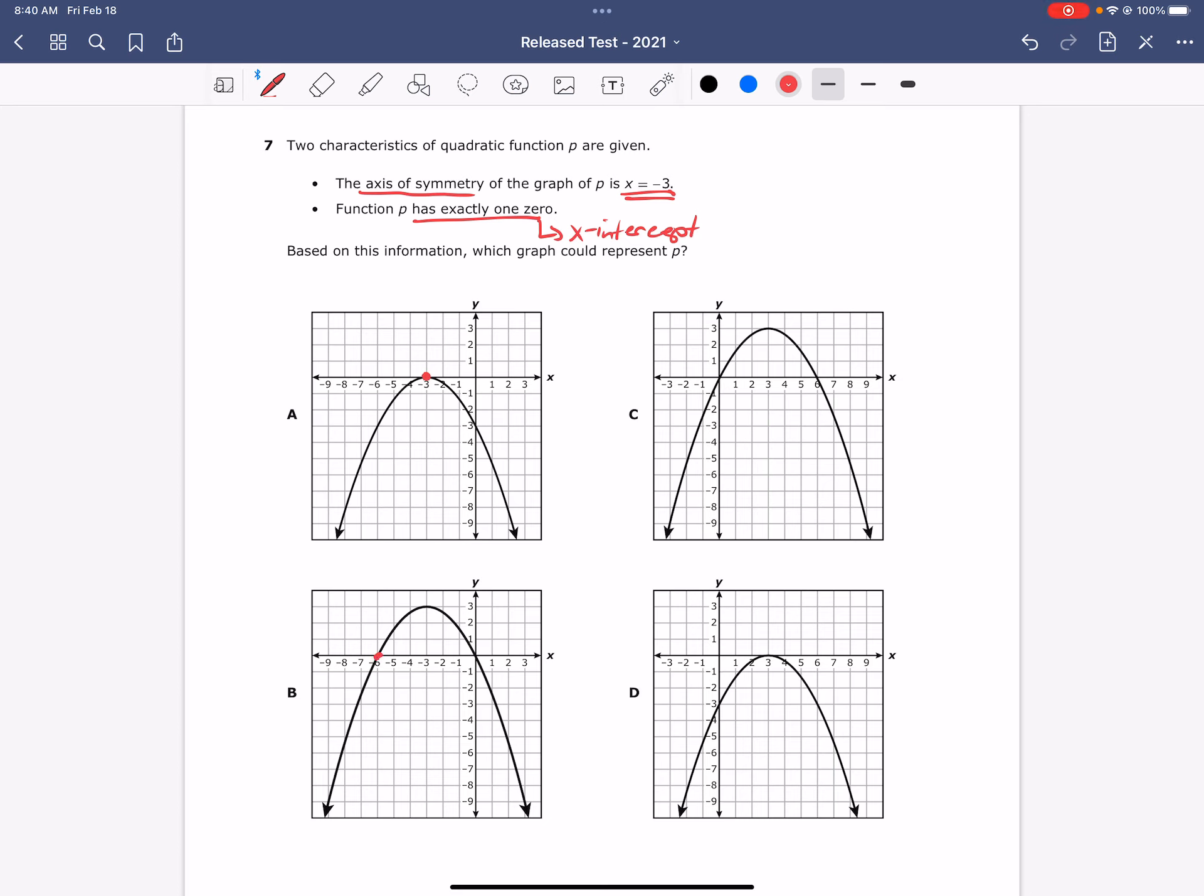Letter B touches or crosses the x-axis at these two points, but our answer should only have one place where it touches or crosses the x-axis. Therefore, B is incorrect. For the same reason, letter C is also incorrect.